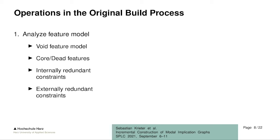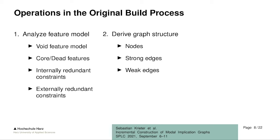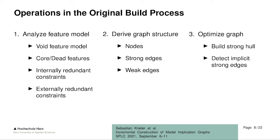Similarly, we look at redundant constraints. We differentiate between internally redundant — which come down to either tautology or contradiction — and externally redundant constraints, where removing such a constraint doesn't change anything about the configuration space. Once we have results for all of these analyses, we go to the second phase: deriving the graph structure. Here we look at all non-core, non-dead features and derive the nodes, then look at non-redundant constraints to derive strong and weak edges.